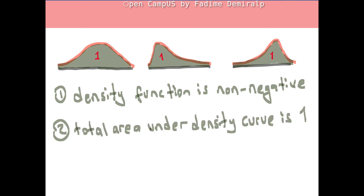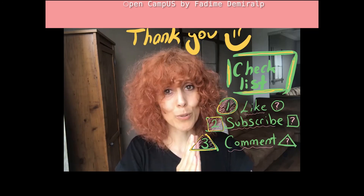We are going to use this property a lot in future chapters for probability calculations. In the next videos of Chapter 2, we will continue with the shape of distributions requiring some calculations, and of course some special distributions such as Bernoulli and normal distributions. Thank you for watching the video. Take care until next time.